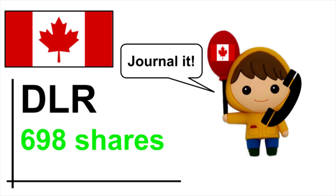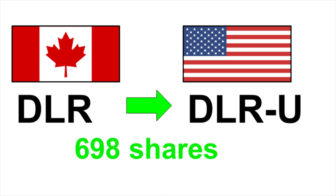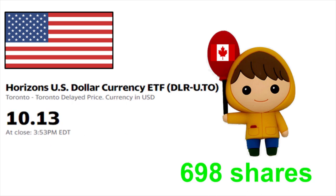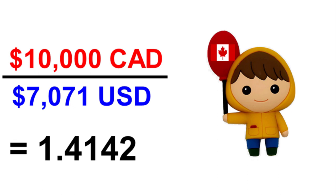What happens is they convert your 698 DLR shares into 698 DLR-U shares — meaning now you own the US version of DLR with the same share count. So what's the value of your US shares? It's 698 shares times the share price of $10.13, which equals $7,071 US. Once you have your US shares, you can sell them for a small commission and cash out your US dollars. Comparing this to the $10,000 Canadian you started with, your effective exchange rate from doing Norbert Gambit is $10,000 divided by $7,071, which is 1.4142 — super close to the actual exchange rate of 1.4151.